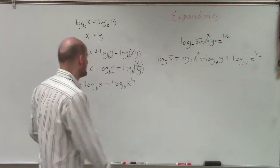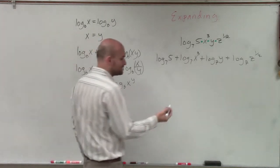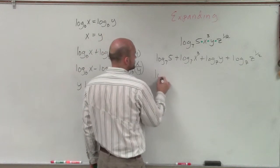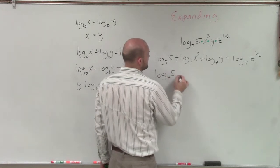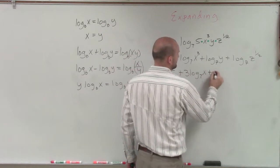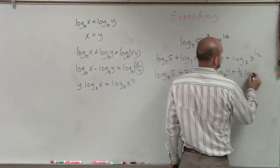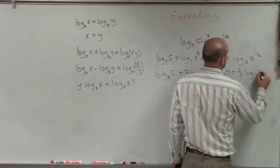Now, the final thing we can do is take all of our exponents in our log and rewrite them in front as a product to finalize our expansion. So therefore, I have log base 7 of 5 plus 3 log base 7 of x plus log base 7 of y plus 1 half times log base 7 of z.